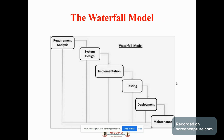In this model, software testing starts only after the development is complete. In the waterfall model, phases do not overlap. Requirement gathering and analysis is one of the phases. In this phase, the requirements are gathered by the business analyst and documented, and clarifications can be sought. The next phase is system design. In this phase, the architect and senior members of the team work on the software architecture, providing high-level and low-level design for the project. The architect creates architecture diagrams and high-level or low-level design documents.